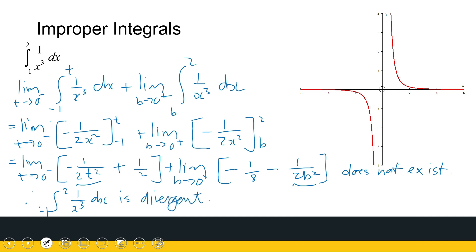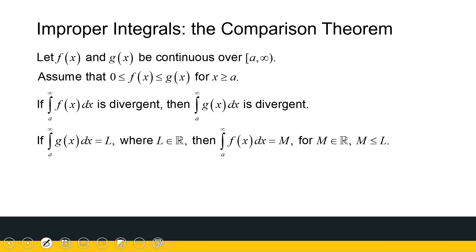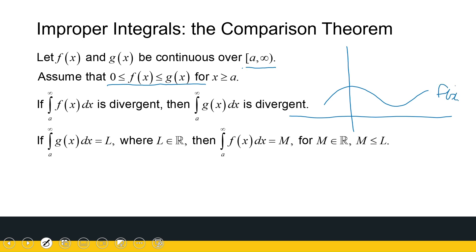So that gets us to the comparison test. The comparison test tells me that if I've got two functions that are continuous over a to infinity — from a fixed real number a — and my function values are positive, so if I sketch them, they are both above the x-axis. We've got f(x) somewhere over there, and g(x) somewhere over there; they're continuous from a to infinity.